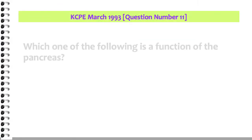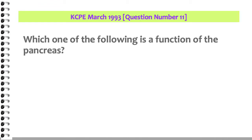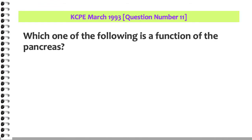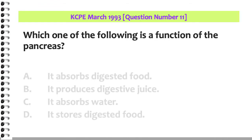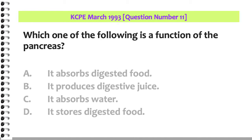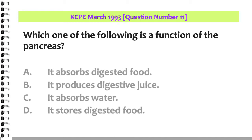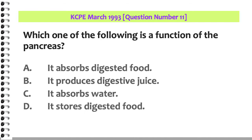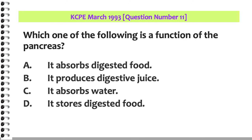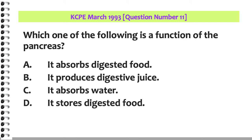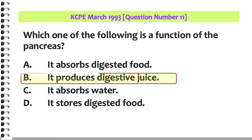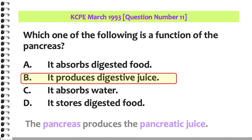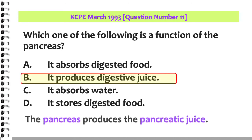Which one of the following is a function of the pancreas? A. It absorbs digested food. B. It produces digestive juice. C. It absorbs water. D. It stores digested food. The answer is B: the pancreas produces the pancreatic juice.